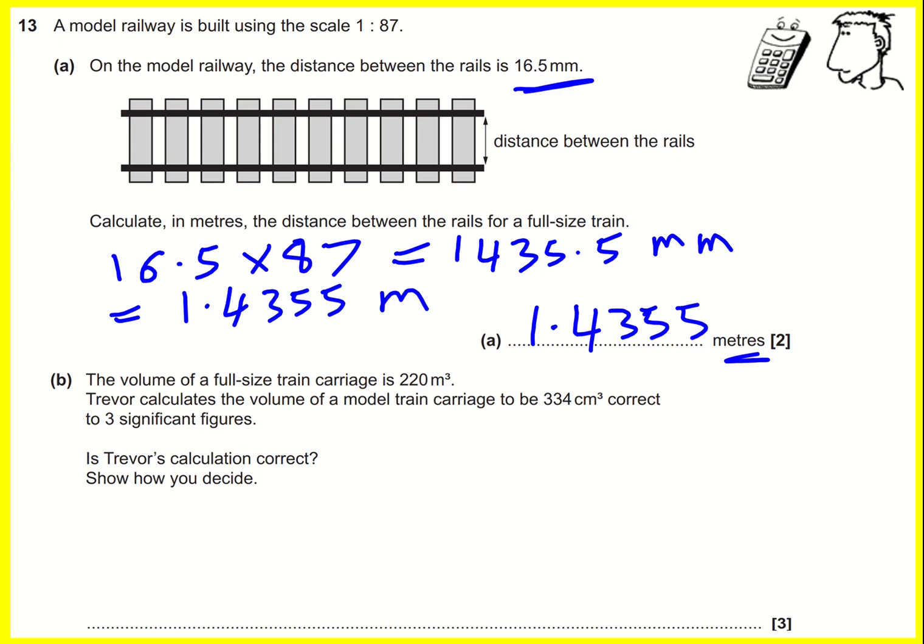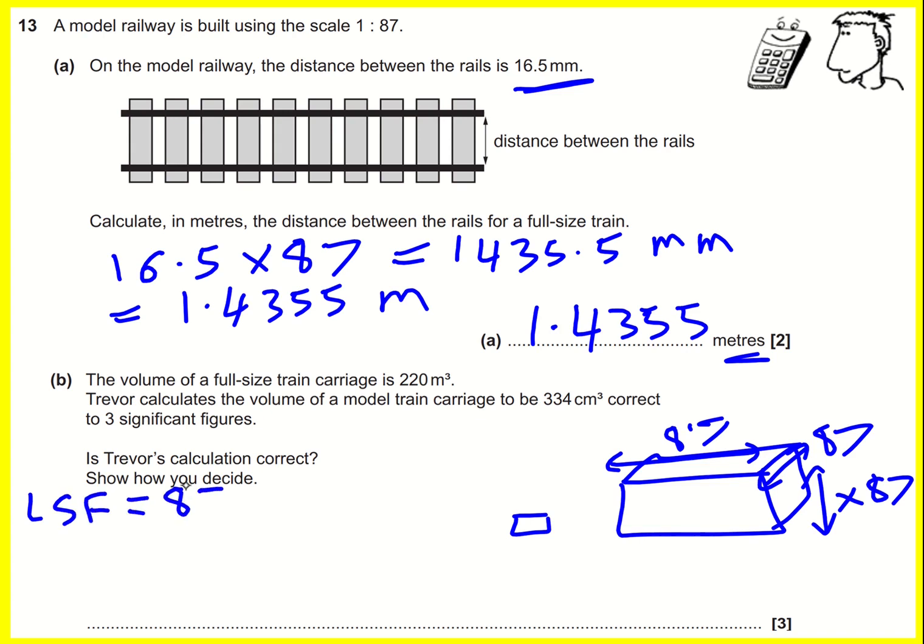We've got the large train. The height of the large one is 87 times bigger, but the length is also 87 times bigger, and the depth is also 87 times bigger. We need to think about the volume scale factor. The length scale factor is 87, but the volume scale factor will actually be 87 cubed.